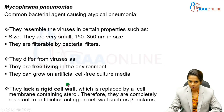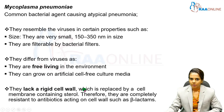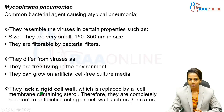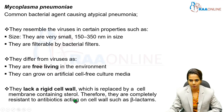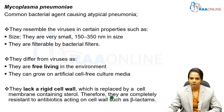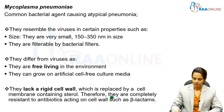Usually, bacteria have a rigid cell wall made up of peptidoglycan, but in mycoplasma, it is replaced by a cell membrane containing sterols. Because it lacks a rigid cell wall, mycoplasma is completely resistant to cell wall-acting antibiotics such as beta-lactams.